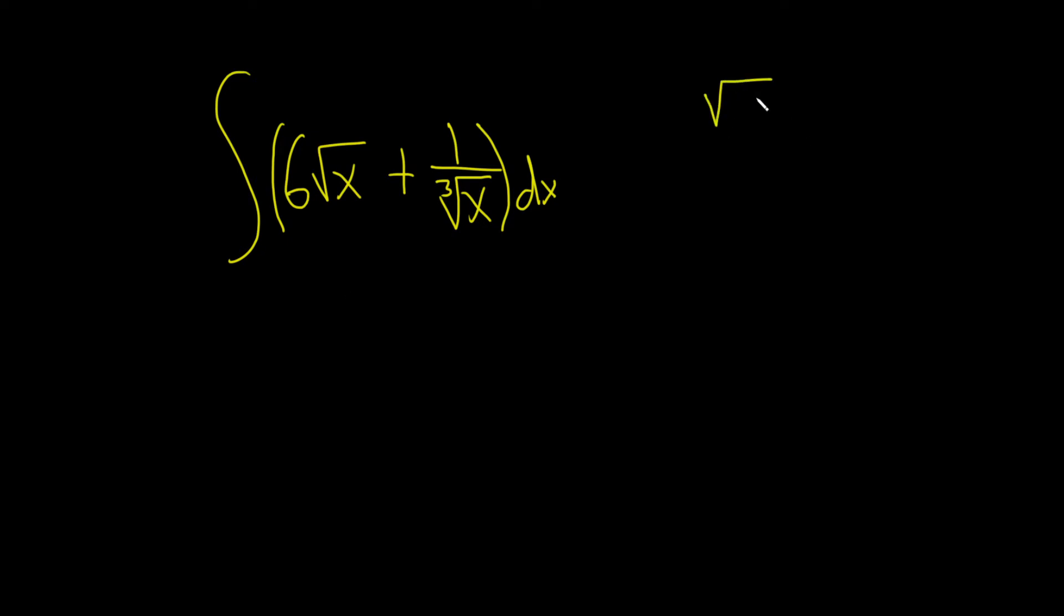If you have the square root of x, there's really a 1 here and a 2 here, and the way it works is it's always x and it's this number over this number, so it's 1 over 2.